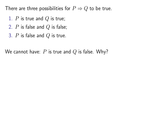It's important to note that we cannot have the case that P is true and Q is false. Because when we say P implies Q, and if P is true, by the meaning of implication, Q must also be true. So this possibility cannot happen — that P is true and Q is false — because in an implication, if we assume P is true, then Q must be true.